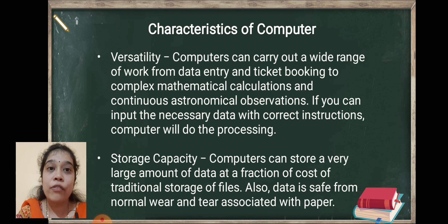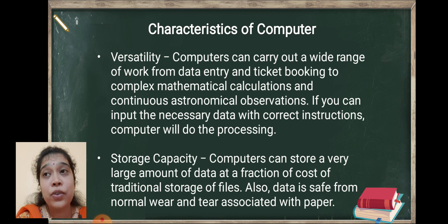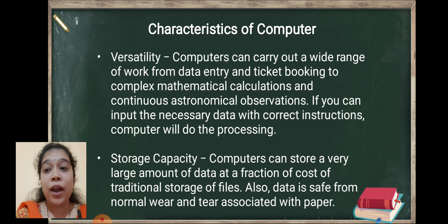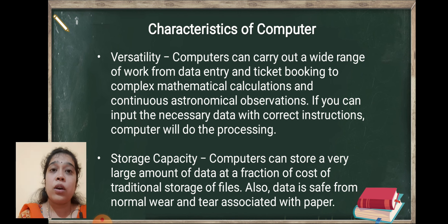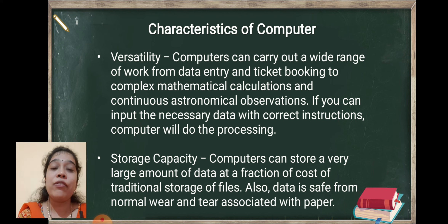Means a variety of data, processes, and work the computer can do — hence it is known as the versatility of the computer. Next is storage capacity. Computer can store a very large amount of data at a fraction of the cost of traditional storage of files. For example, suppose we have to store 1 GB of data in hard copy — then we require lots of papers, files, proper arrangement, and space. But in the case of computer, we require very less time and the cost is very minimum. Hence the storage capacity of the computer is very high and even the data is safe.